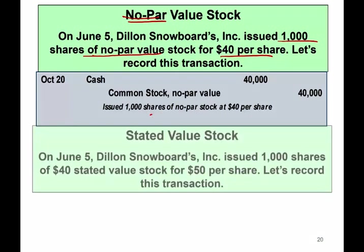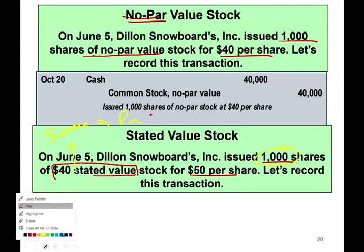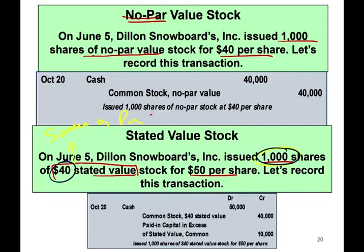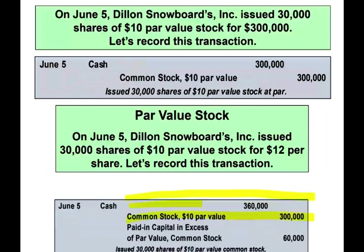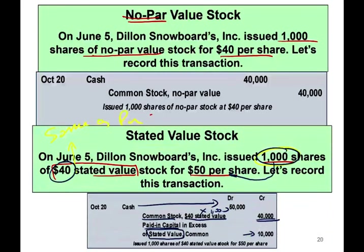Now let's assume the problem reads: June 5th, we issued 1,000 shares of $40 stated value for $50. Remember, when you hear the word stated value, it's the same thing as par value. So we take 1,000 shares times $40 stated value to get common stock of $40,000. We debit cash for 1,000 times $50, which is $50,000. Common stock is $40,000, and the remaining $10,000 is called paid-in capital in excess of stated value — the same concept as excess of par value.